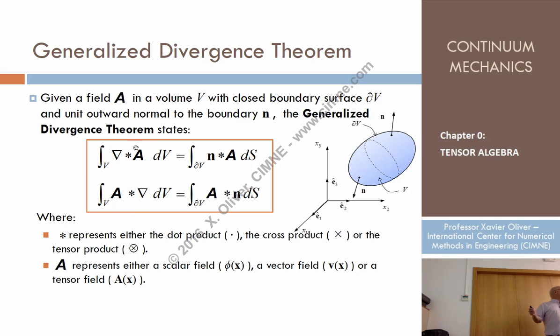That is general divergence theorem. Whenever I have a differential operator acting, acting means multiplied by some operation, acting with some operation on a tensor field, any order, I can replace the volume integral by a boundary integral, just by replacing nabla times n, and keeping the other, the operator and the tensor constant, and doing the operation in the boundary.